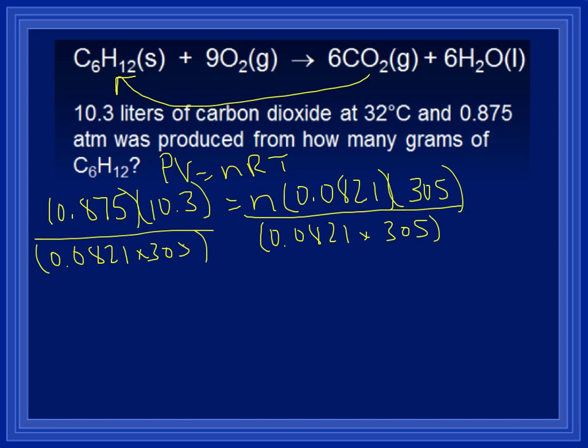That will give us N equals, round to 3 sig figs, 0.360 moles of CO2. Now we don't want CO2. We want C6H12. So now we're going to do some stoichiometry.